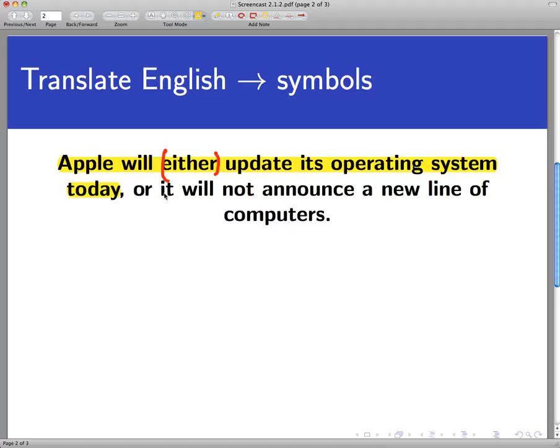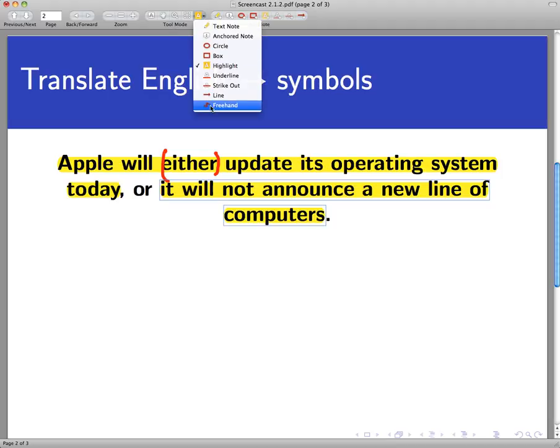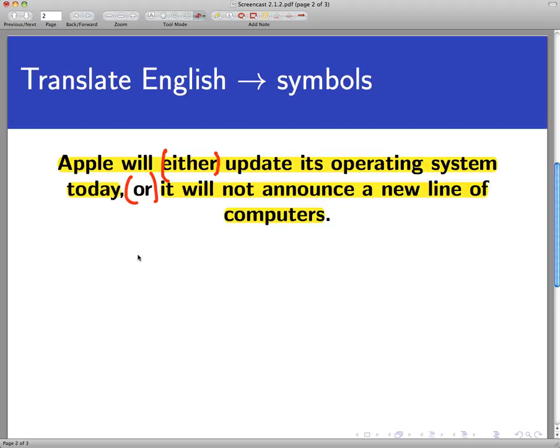The second sentence you see in here is it will not announce a new line of computers. So that's two statements that make up this larger statement, and of course they're joined by or. So this is what in your technical terminology would be called a disjunction, an or statement.